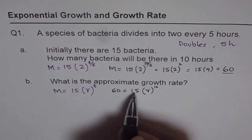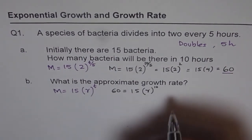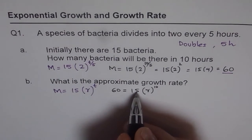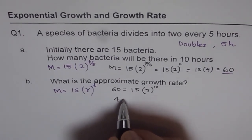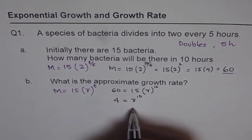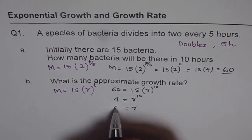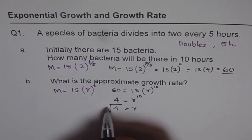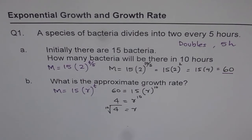Now when you divide 60 by 15, what do you get? You get 4 equals to R to the power of 10. So what is R equals to? R will be 10th root of 4. And 10th root of 4, use your calculator to find the answer.